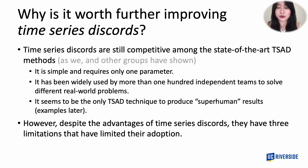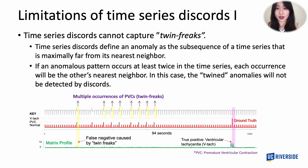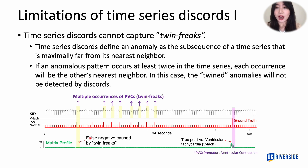However, there are still three important problems that need to be addressed. First of all, time series discord cannot capture train freaks. This ECG contains two types of anomaly: one that occurs exactly once, highlighted in pink, and time series discord can easily find it — you can see a bump on the matrix profile. However, the other type of anomaly occurs many times throughout the ECG data, shown by the yellow highlight. We call this multiple freaks or train freaks. This kind of anomaly cannot be detected by time series discord, so you can see a false negative at this position.